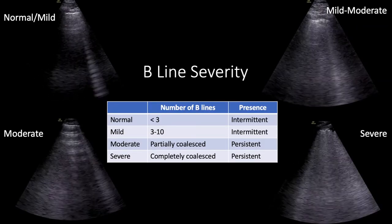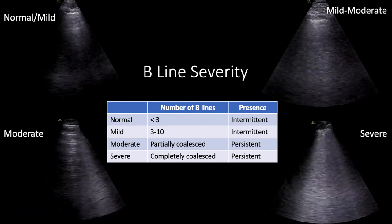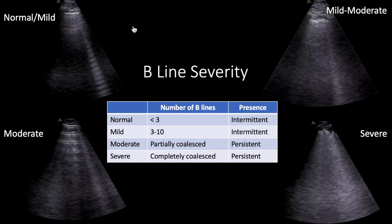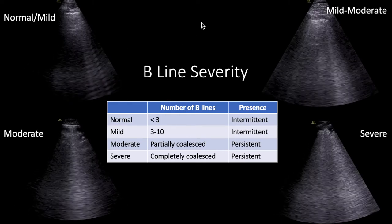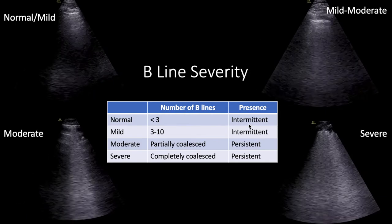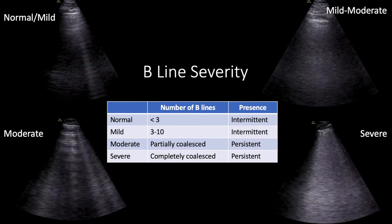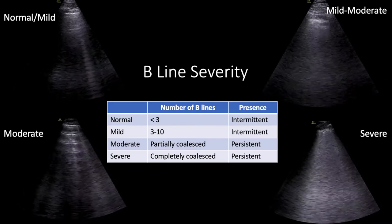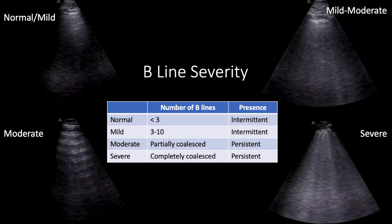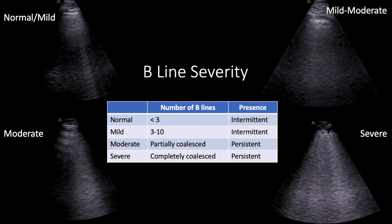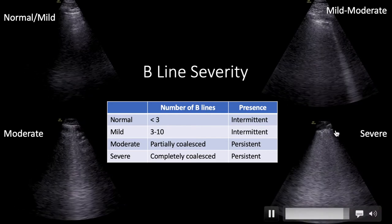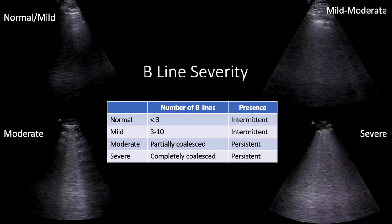Now that we can recognize B-lines, we should always grade their severity. As the lung becomes wetter or more fibrotic, you'll see increasing numbers of B-lines that become thicker and more persistent. A normal lung exam has fewer than three B-lines — they come and go with just one or two visible. A mild to moderate picture shows increasing numbers of B-lines getting thicker and more prominent, staying on screen for the full respiratory cycle. When the lung becomes severely edematous, the B-lines become very thick and prominent, and the lung almost appears as solid tissue.